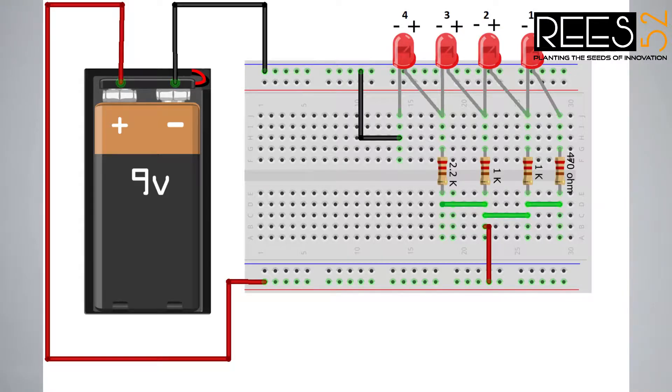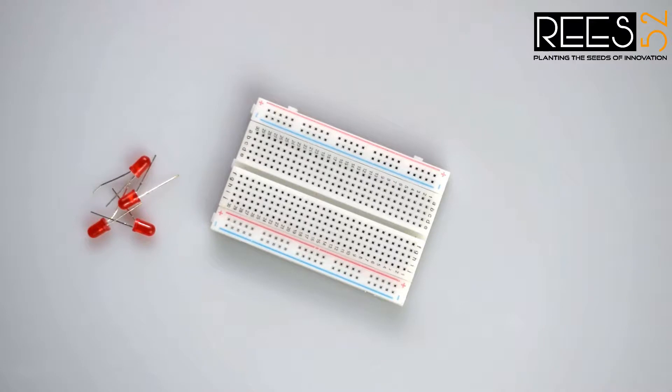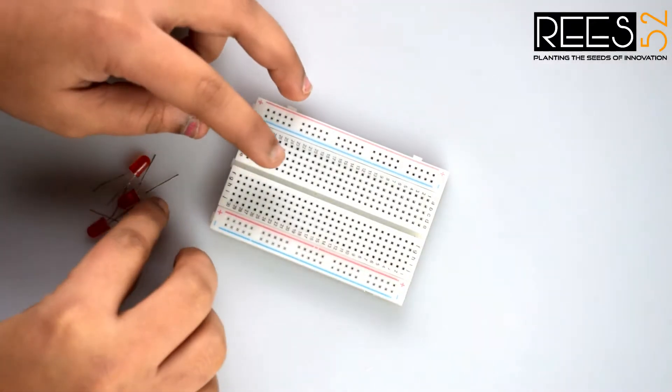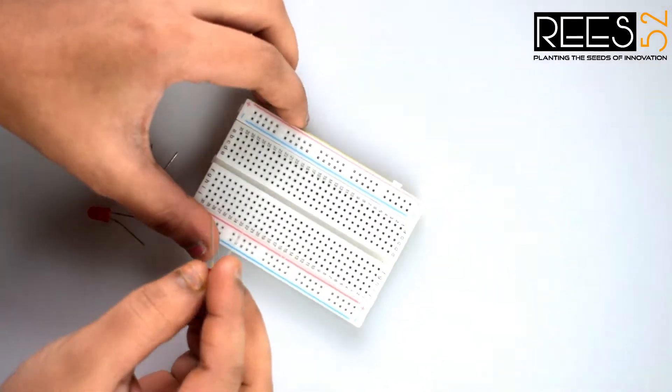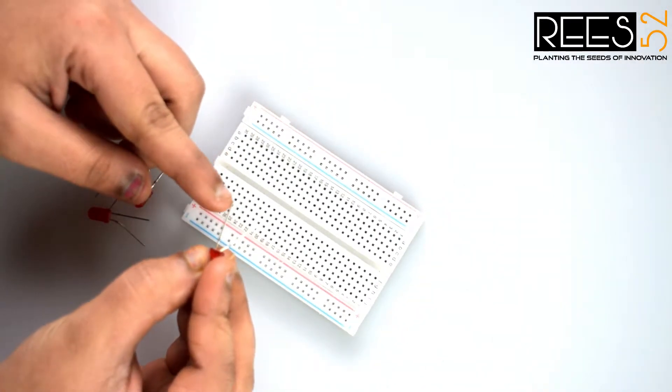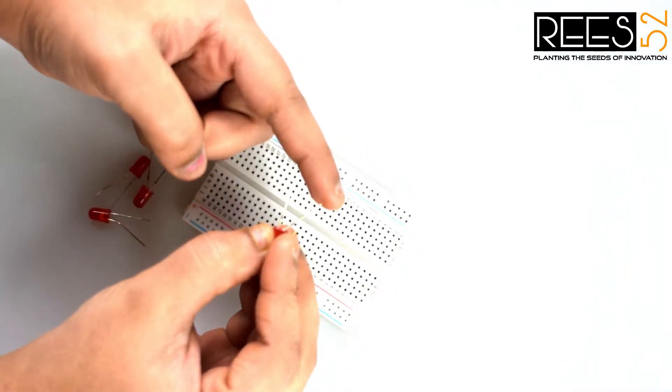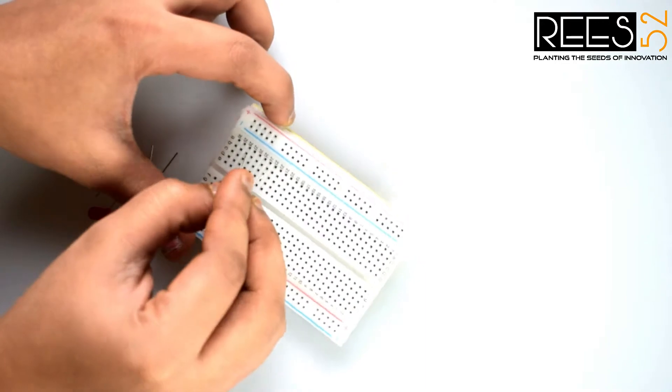This is our circuit diagram. First of all, connect all LEDs to the breadboard in series connection like this. This is the longer leg that is the positive leg of LED, and this is the shorter leg that is the negative leg of LED.